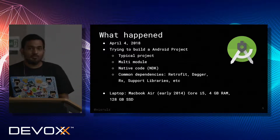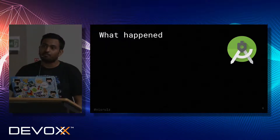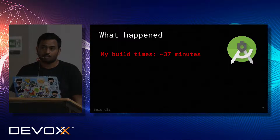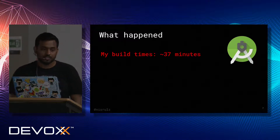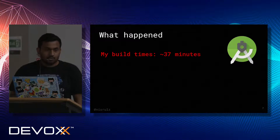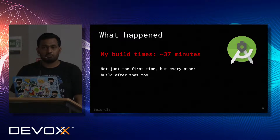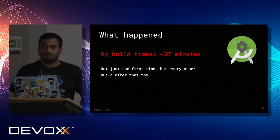I tried to build the project for the first time, and my build times were around 37 minutes. I just downloaded the project and started working with it the first time. My initial guess was that maybe Gradle was not able to cache anything and Android Studio was not able to download dependencies. So it would be fine the second time since everything would have been cached. I tried it for a second, third, fourth, fifth time — nothing happened. It was still around 36 minutes of build time.